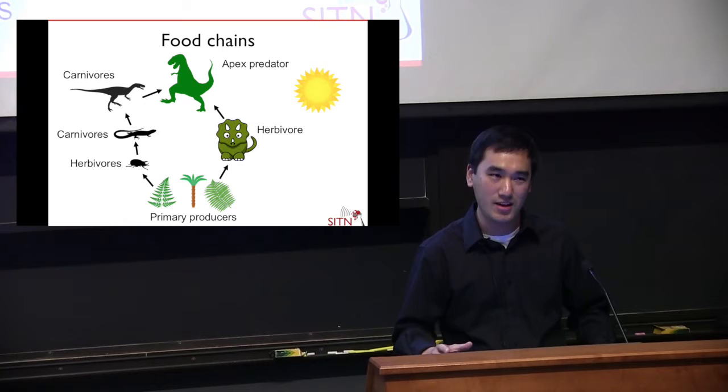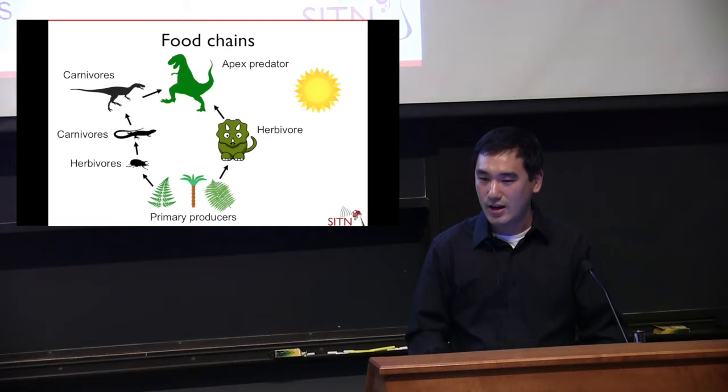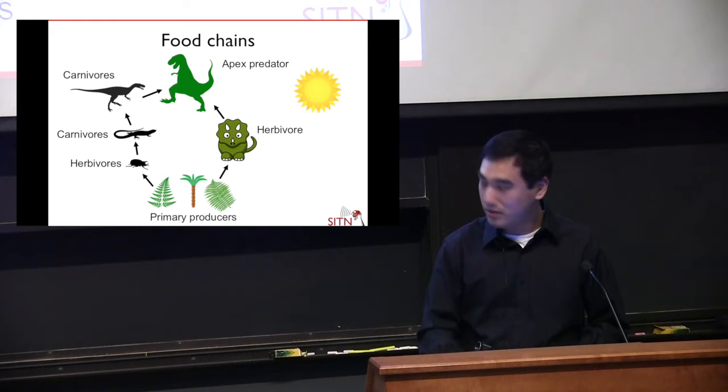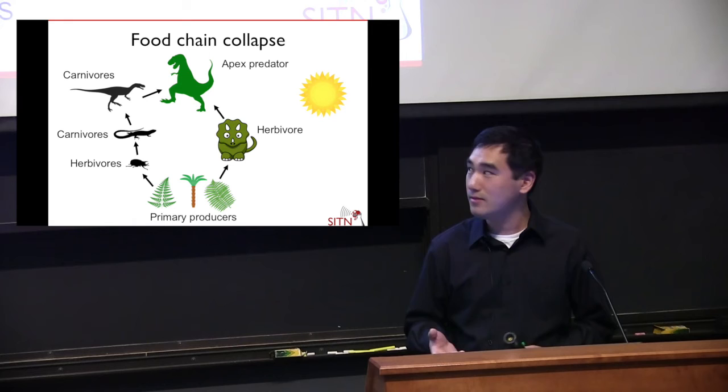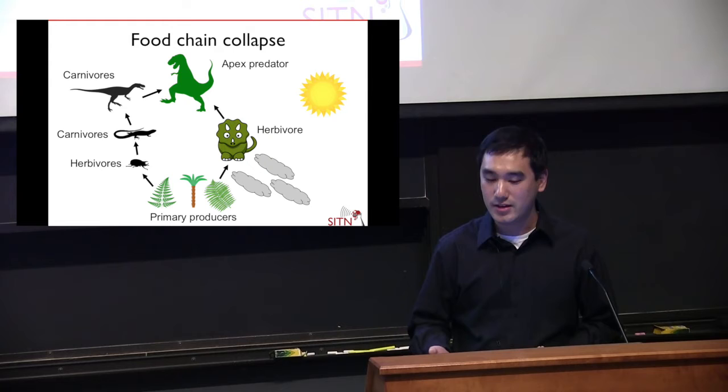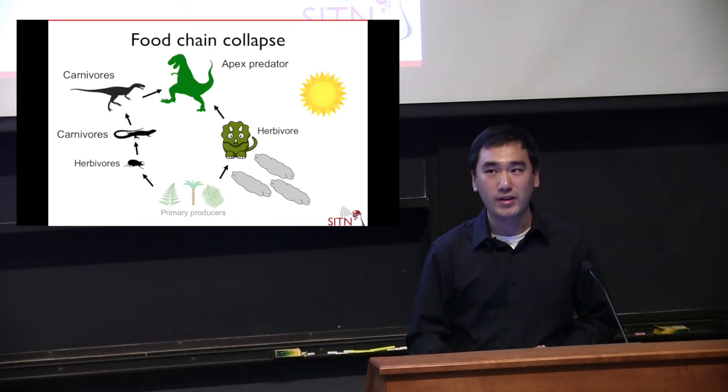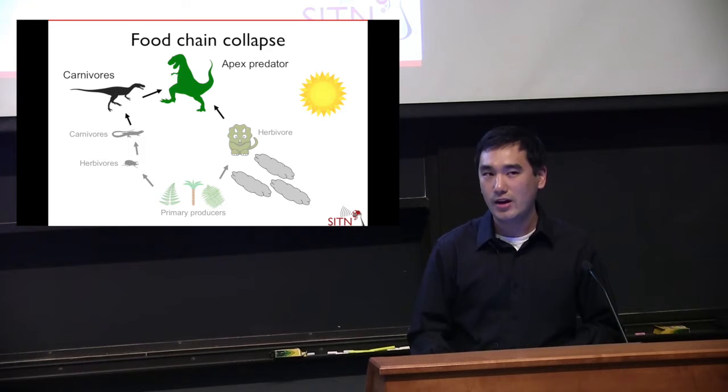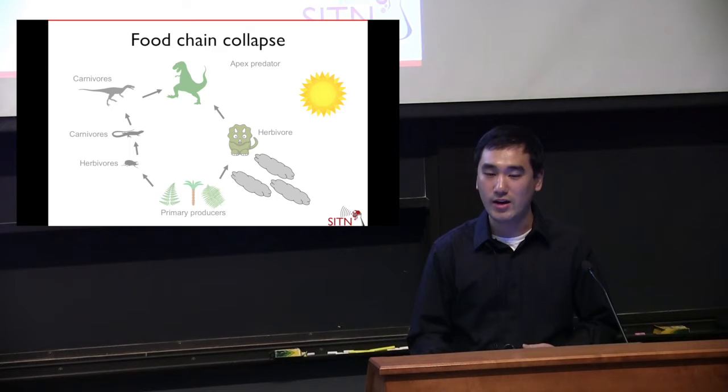All ecosystems have one key vulnerability: at the very base of the food chain, the primary producers. If something ever happens to block the sunlight and prevent them from getting access to the food they need, the plants die off — they starve. And if the plants die off, the plant eaters don't have anything to eat, so they'll die off. And if the plant eaters die off, the meat eaters that rely on them will go away. It goes further and further up the food chain until you have a complete collapse of the ecosystem and multiple extinction events.